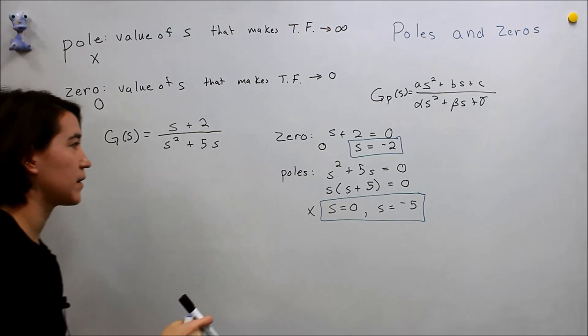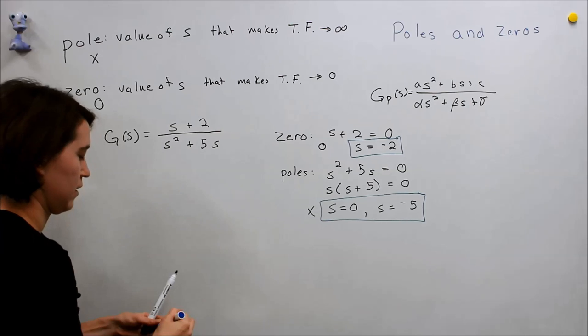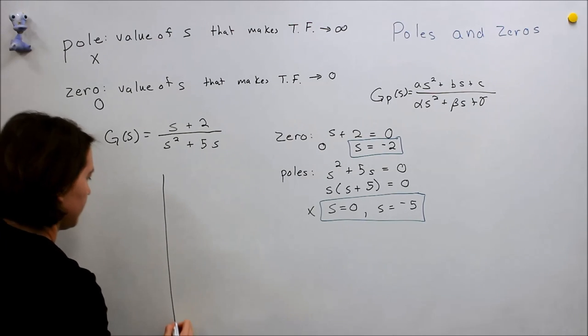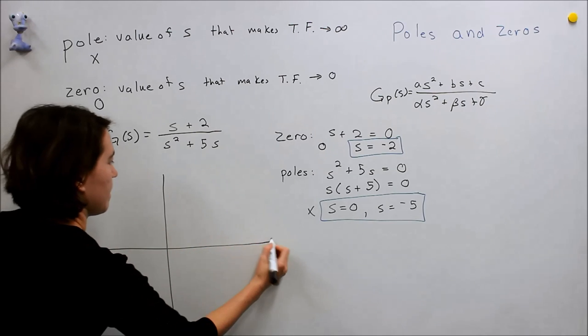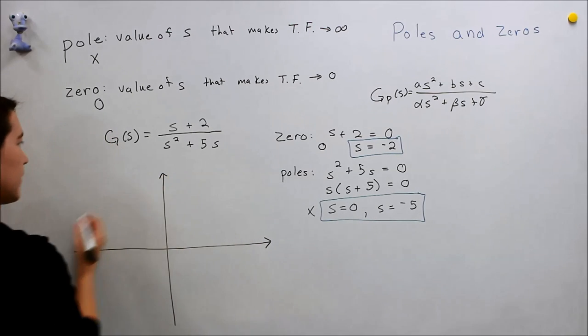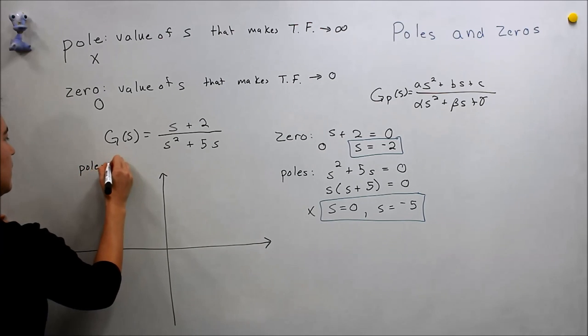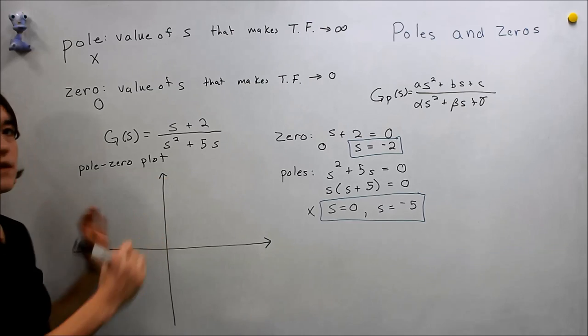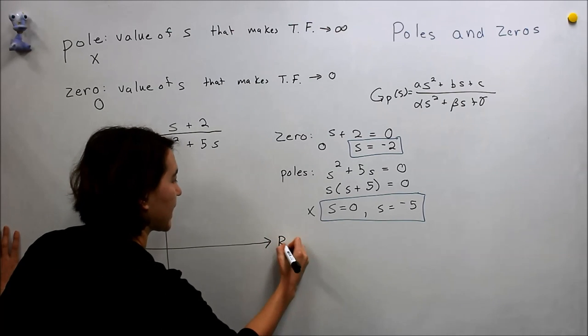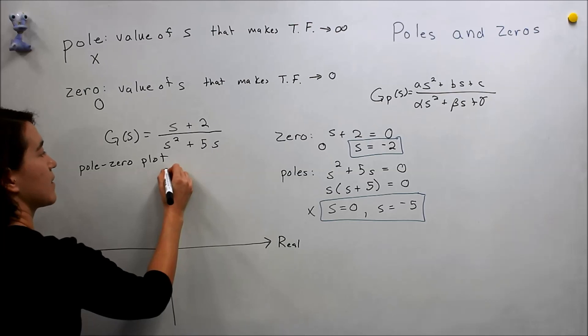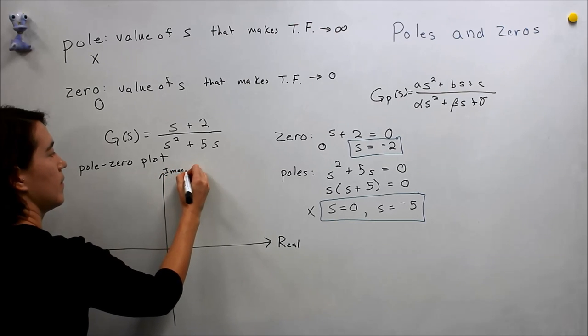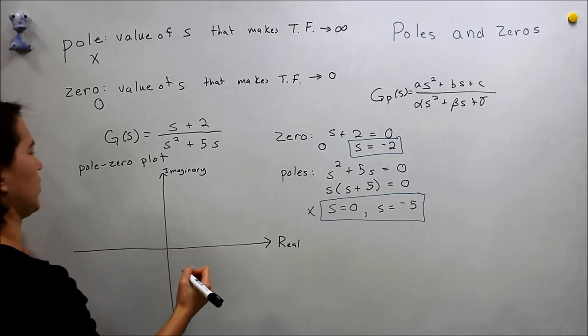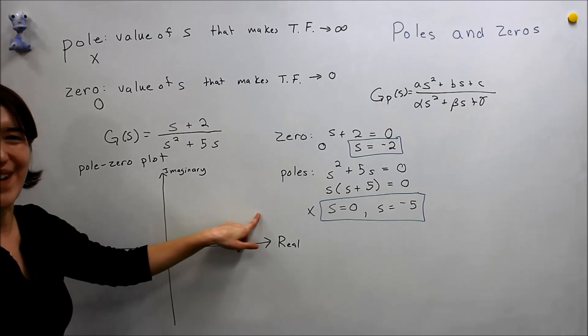And what we can do is actually map these on what we call a pole-zero plot. So this is our pole-zero plot. And essentially all we're doing is mapping s on the real and imaginary axis. The real and imaginary axis, right? So all we have to do is use these appropriate symbols to map them correctly.